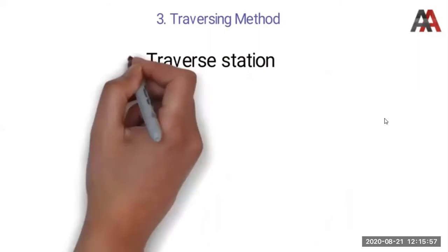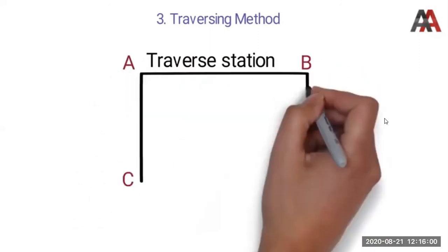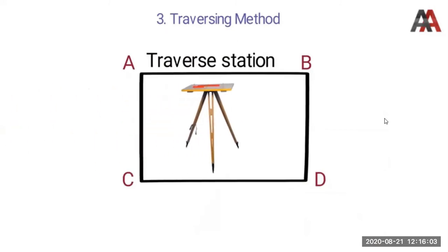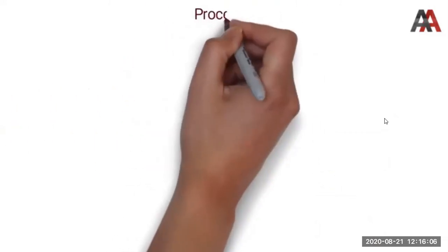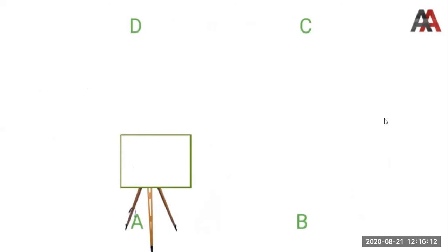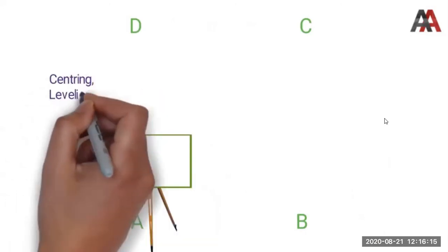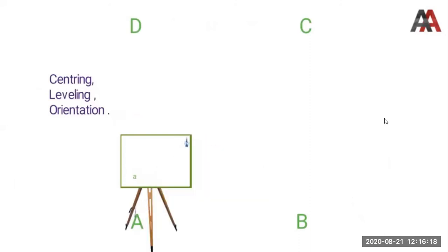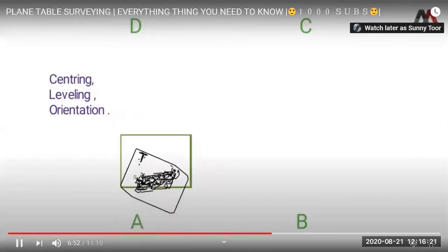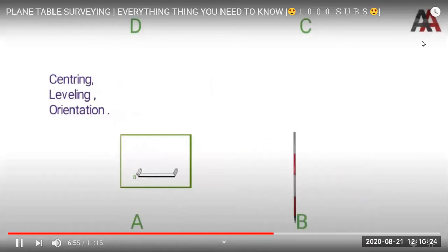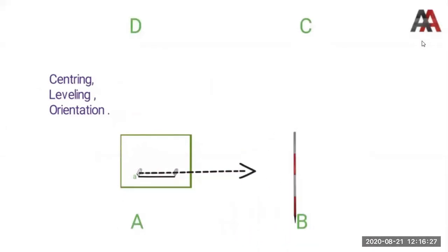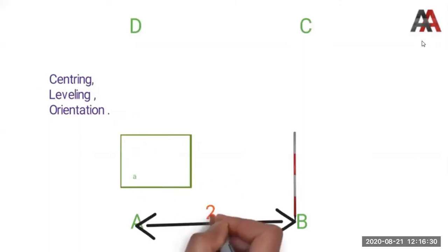The traversing method is similar to compass traverse and theodolite traverse, but we use the plane table. ABCD are my traversing stations. First, I set the table at point A, plot station A on paper, do centering, leveling, orientation, and mark north. Then I range from point A to point B using the alidade, measure the ground distance AB, use a suitable scale, and draw line AB on the paper.